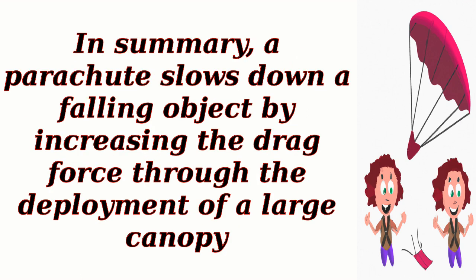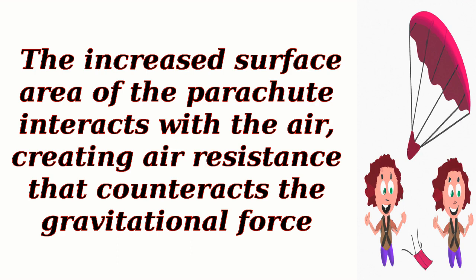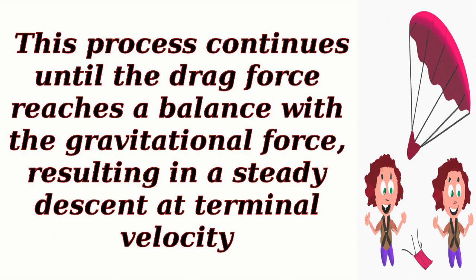In summary, a parachute slows down a falling object by increasing the drag force through the deployment of a large canopy. The increased surface area of the parachute interacts with the air, creating air resistance that counteracts the gravitational force. This process continues until the drag force reaches a balance with the gravitational force, resulting in a steady descent at terminal velocity.